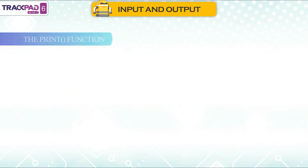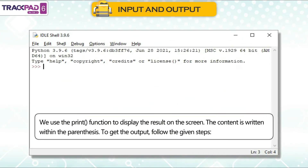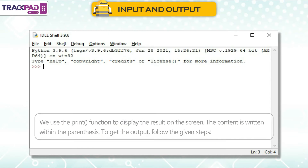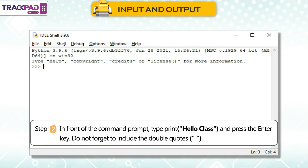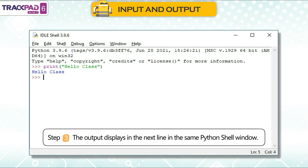The print function is used to display the result on the screen. The content is written within the parenthesis. To get the output: Step 1, open the Python shell window. Step 2, type print("Hello class") at the command prompt and press the Enter key — do not forget to include double quotes. Step 3, the output displays in the next line in the same Python shell window.